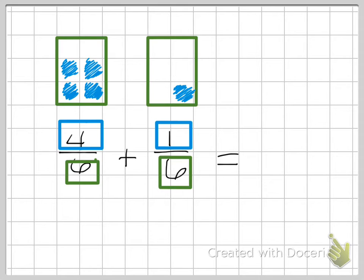So now that I've set up my problem and I have my visual, I can go ahead and add. So one really important thing to know when we're adding fractions: this denominator, if it is the same, which it is in our problem, does not change. So our denominator is going to stay 6. And then what we can do is add 4 plus 1, and that gives us 5.